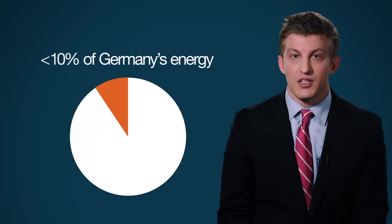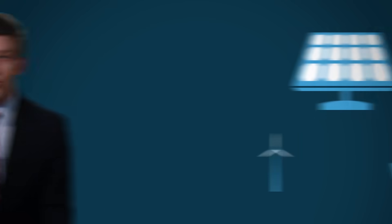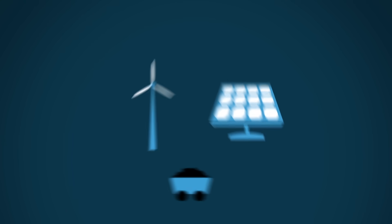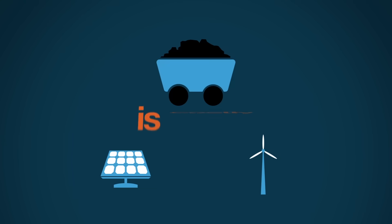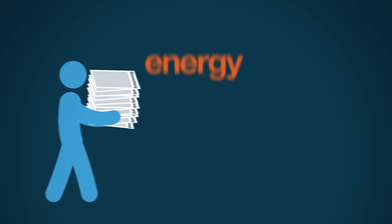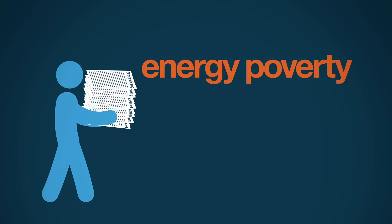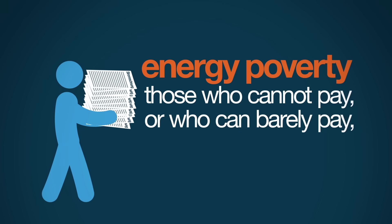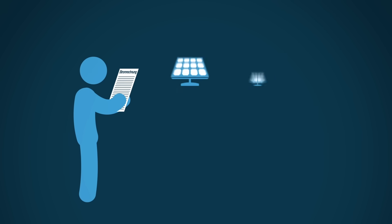So while Germany has spent tens of billions of dollars to subsidize solar panels and windmills, fossil fuel use in that nation has not decreased — it's increased. And less than 10% of their total energy is generated by solar and wind. Furthermore, switching back and forth between solar and wind and coal to maintain a steady flow of energy is costly. Utility bills for the average German have gone up so dramatically that energy poverty has become a popular term to describe those who cannot pay, or who can barely pay, their electricity bills. If those bills one day go down, the reason will not be more solar and wind energy, but lower oil and coal prices.